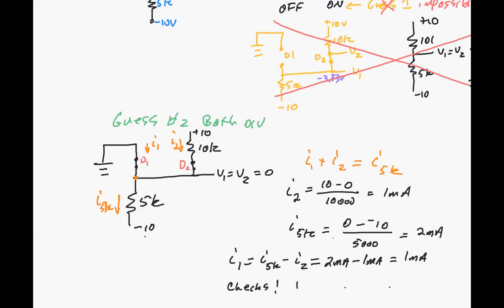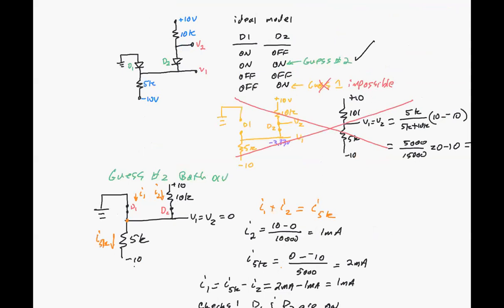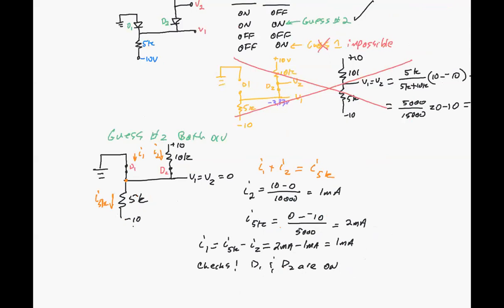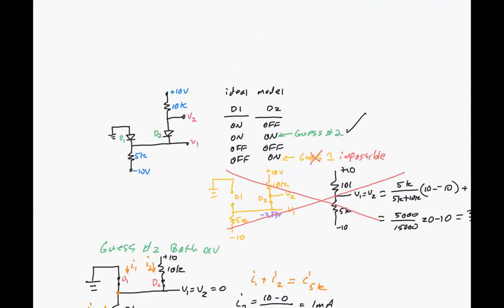D1 and D2 are on. We checked it out. And we got this guess was right without having to try the other two. We know it's consistent and it works. Now we could go ahead and try this same circuit with the constant drop model.